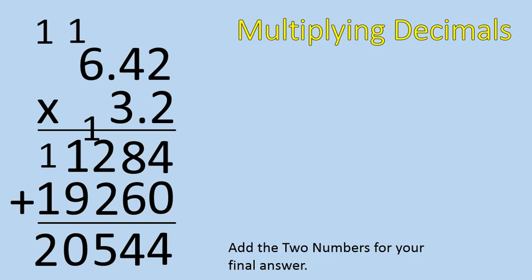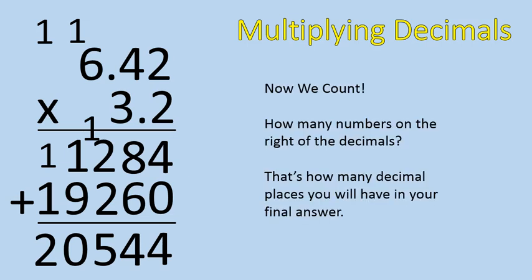So that gives me 20,544. But I'm not quite done because I'm multiplying decimals now, not just multiplying normal numbers. So I count.